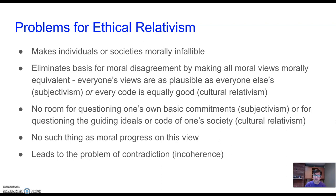Another way of putting that is there's no such thing as moral progress, according to the relativist. So when a society expands the rights of women, there's no way of arguing that that society is better off than it was before — it's just different. Now the society has different attitudes toward the rights of women than it did 50 years ago, but the relativist can't explain that as a form of progress. It's just something changed, but it didn't get better or worse, because every code is equally good, or every attitude is equally plausible. Individuals don't make moral progress; their attitudes just change.